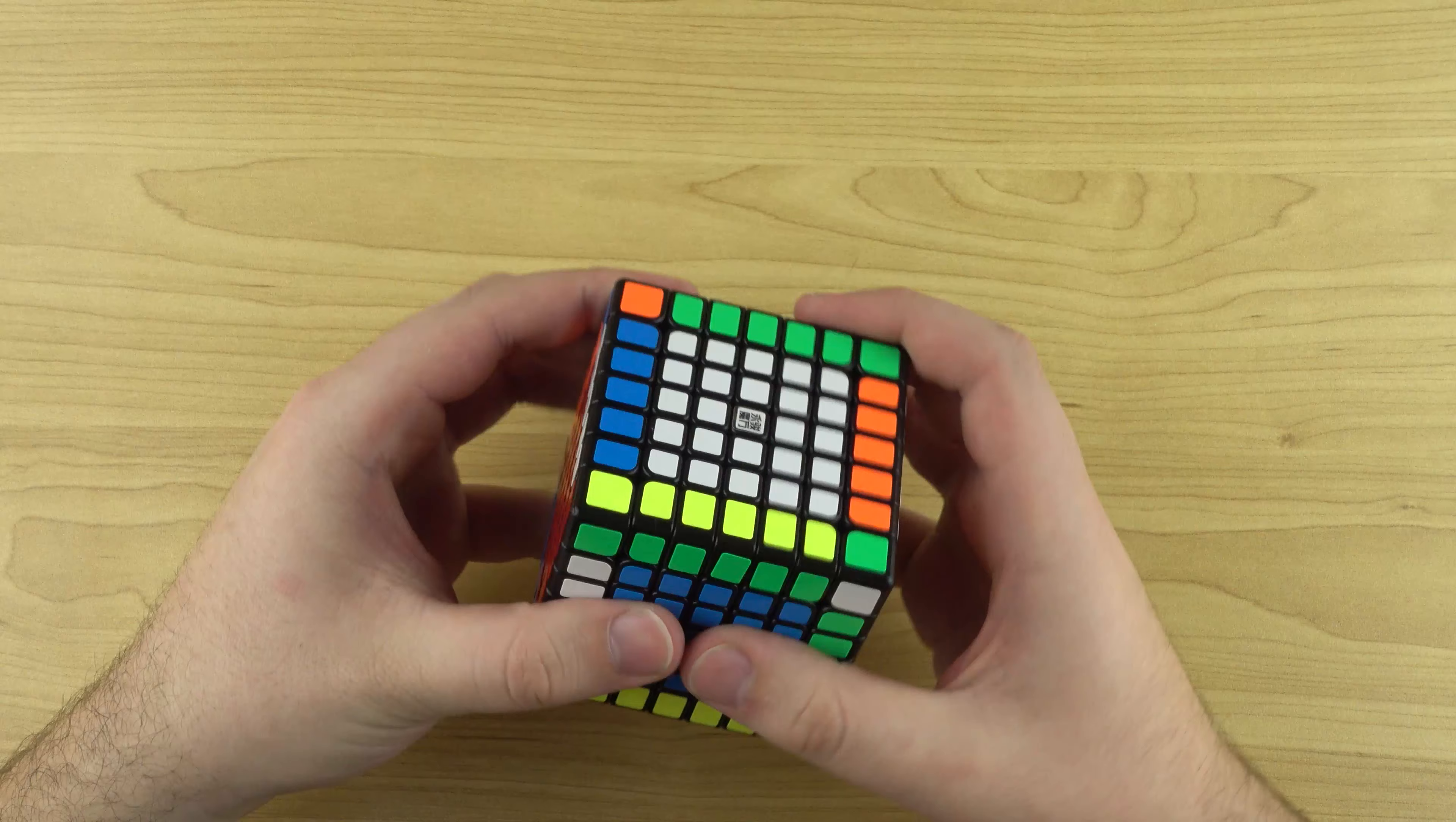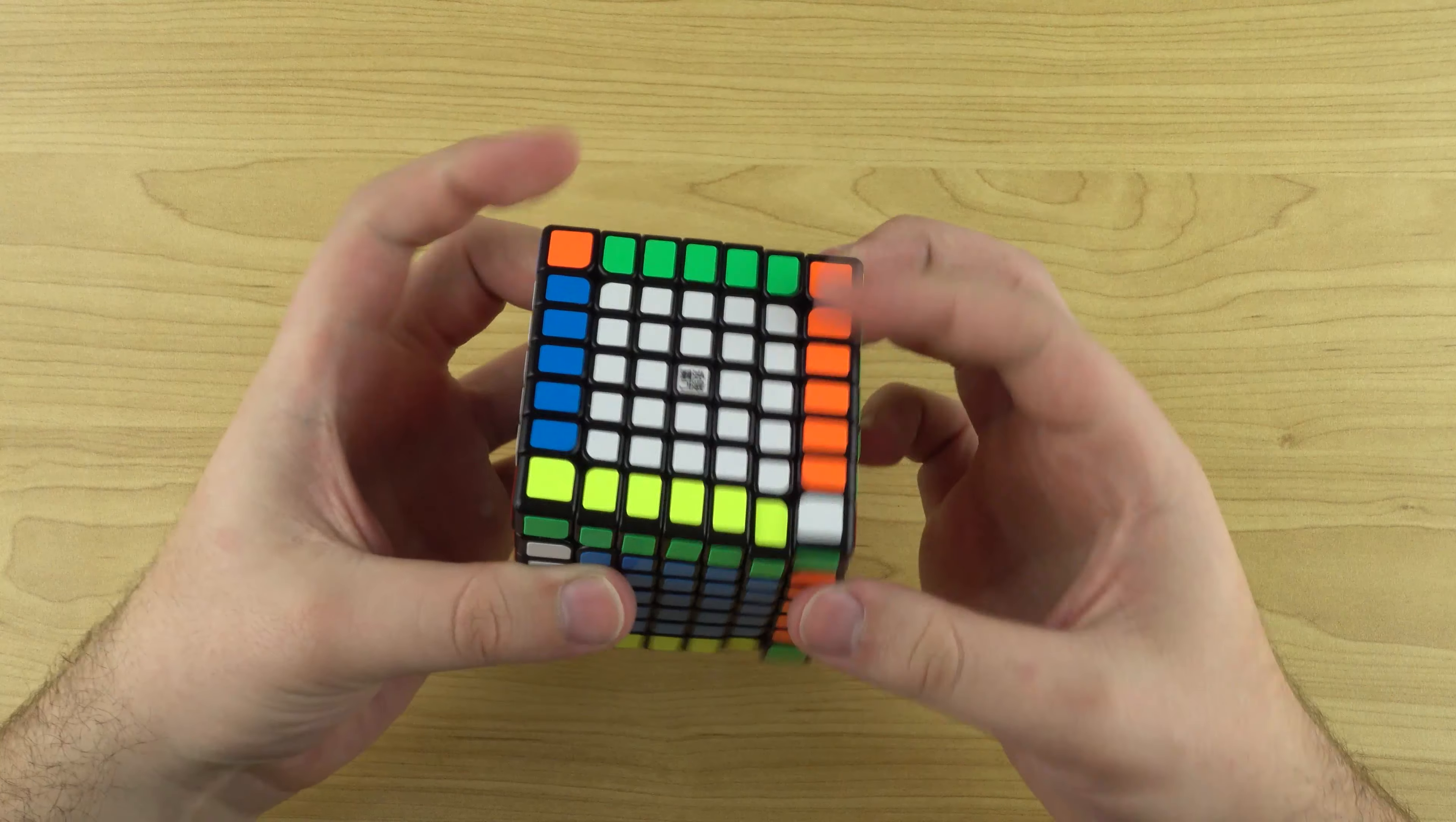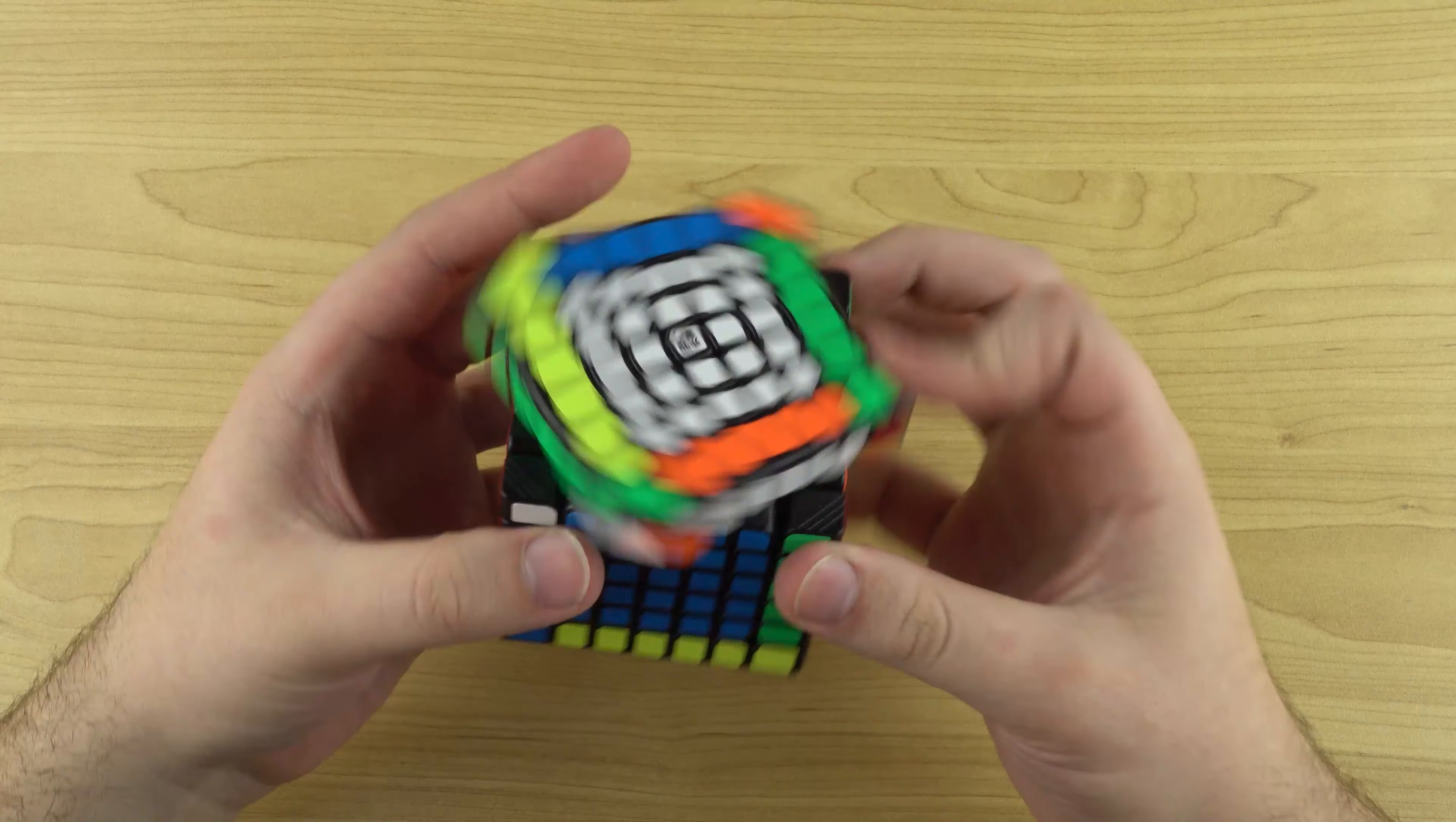I'd say the magnets are light-medium, turning is pretty smooth, maybe slightly sandy. It does come with a little bit of lubricant in the box, but the turning is very good. Like I could almost use this as my main straight away, to be honest. But I'm not crazy about 7x7. I'm not that fast at it, but I'm just trying to convey how good this is for the price.